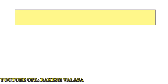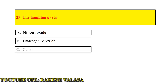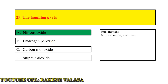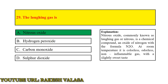Question number 29: The laughing gas is — Answer: Nitrous oxide. Explanation: Nitrous oxide, commonly known as laughing gas or nitrous, is a chemical compound and an oxide of nitrogen with the formula N₂O. At room temperature, it is a colorless, non-flammable gas with a slightly sweet taste.